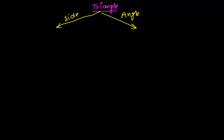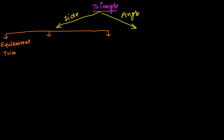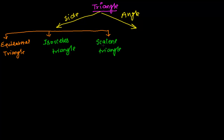There are two major bases to classify the triangle: one is sides and the other is angle. Based on the sides, we can classify triangles into three major categories: the first is equilateral triangle, the second is isosceles triangle, and the third is scalene triangle.